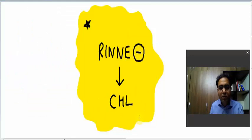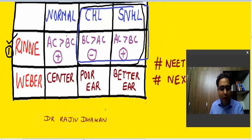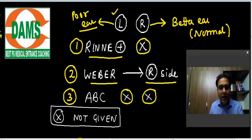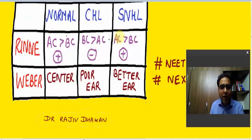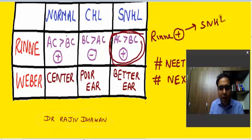You must remember: Rinne negative means conductive hearing loss, because Rinne information is always given in tuning fork clinical vignettes. Rinne negative means BC is better than AC; whenever Rinne negative is given, think primarily of conductive hearing loss. Now, the question says Rinne is positive on the left side. Rinne positive is indicating that it is a case of SNHL.